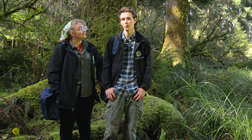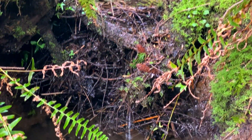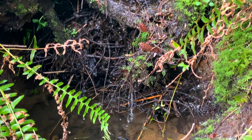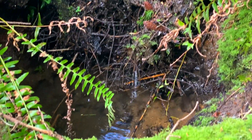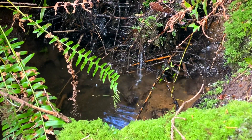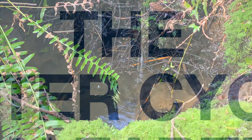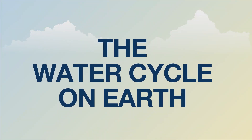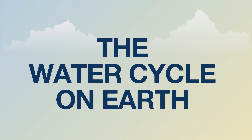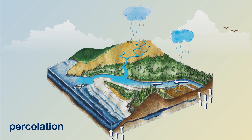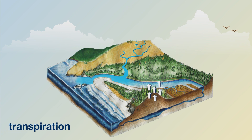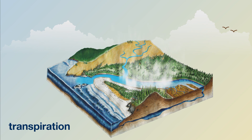In Learning Circle 2, we saw how individual raindrops combined together, emerged from the ground as tiny springs, and moved downhill through the force of gravity. We also saw evidence of two parts of the water cycle at work: percolation, where water moves through the ground under our feet, and transpiration, where our raindrop is pulled up through plants and evaporates from their leaves and needles into the atmosphere as a gas.